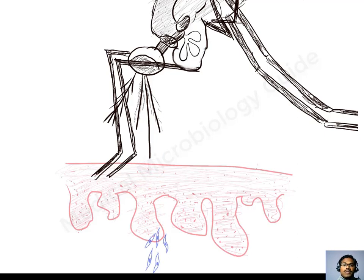The process from ingestion of gametocytes until the mosquito becomes infective is called the extrinsic incubation period. This is around 1 to 2 weeks for Plasmodium falciparum. That finishes the life cycle of Plasmodium falciparum. Thank you for watching this video.